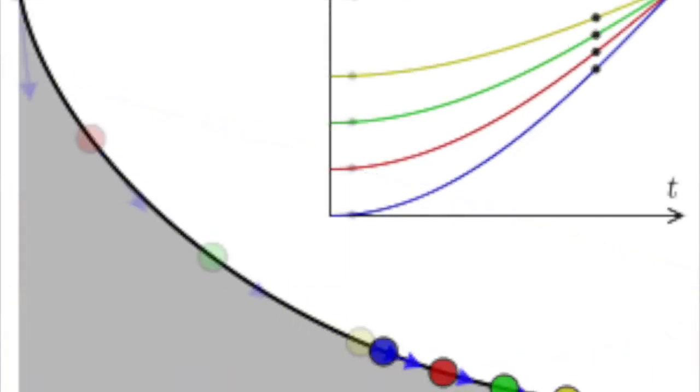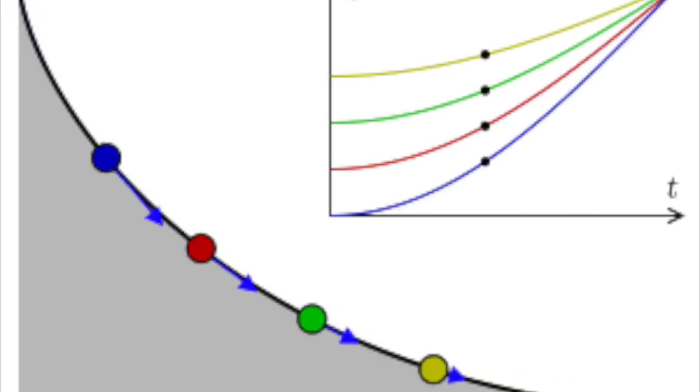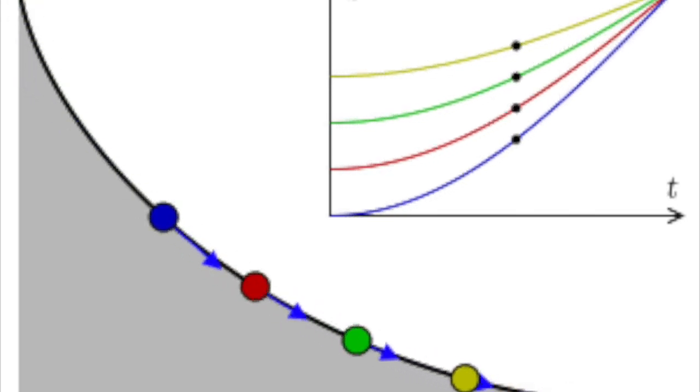The tautochrone problem is to find the curve down which an object can slide from any point to the bottom, accelerated by gravity and ignoring friction, always in the same length of time.